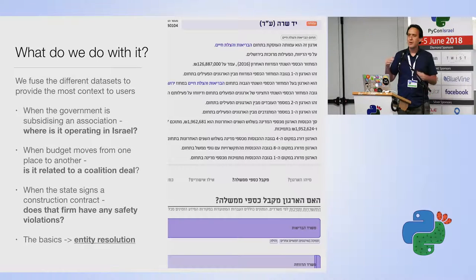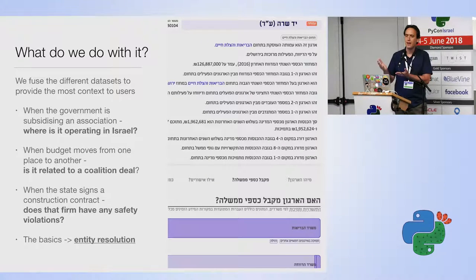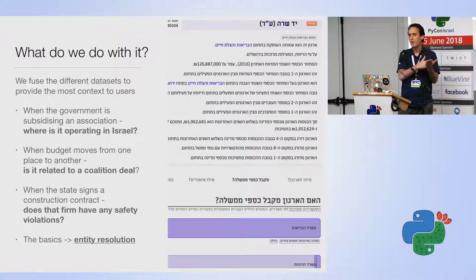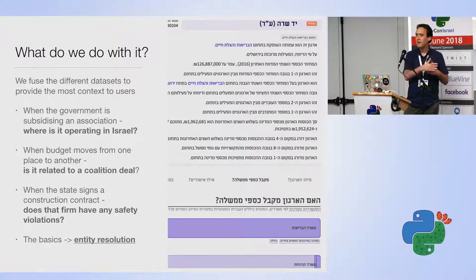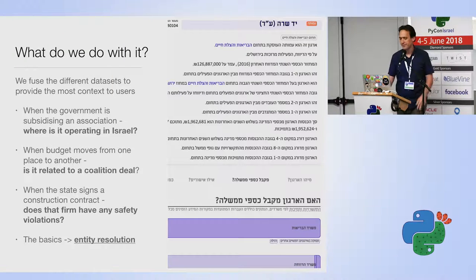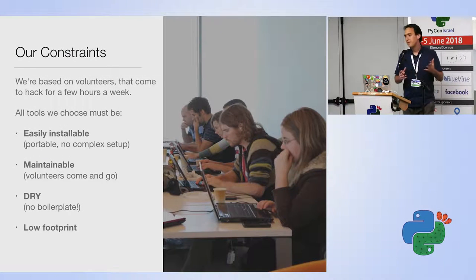Even the most basic thing — entity resolution — is valuable here. Many datasets say 'we gave money to this company' but give only the name, which can be written five different ways. We want to know exactly who that company is. In Israel each company has a unique ID, but that ID isn't always published. So combining all registrars — companies, associations, municipalities, government offices — and creating a list of all names with all unique IDs is something that exists only in our database.